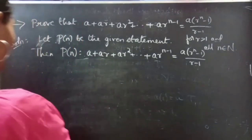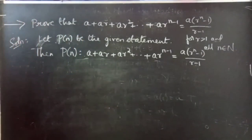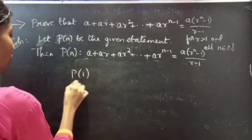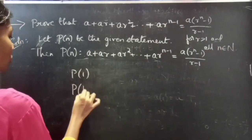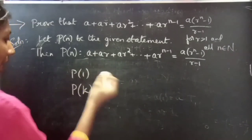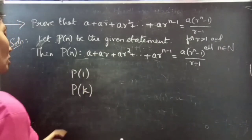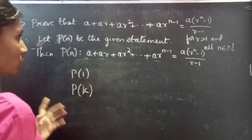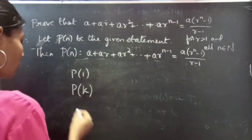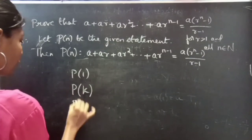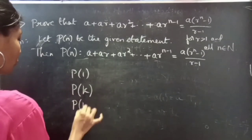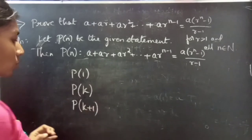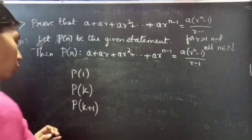So here we will show that the statement is true for n equals 1, then we will assume that the statement is true for some n equals k belonging to natural numbers, and finally we will prove the statement for n equals k plus 1.